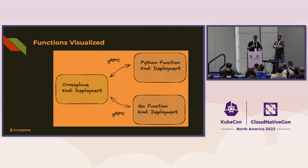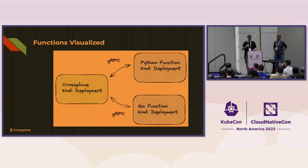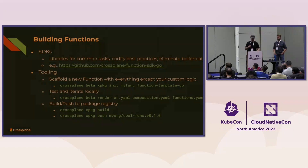You install a function similarly to installing a provider or configuration — Crossplane has a package manager where you declaratively say 'make this function available.' Functions feel like building a serverless function: you edit function.py or function.go, add a little bit of logic, and package it up. But behind the scenes, Crossplane turns that into a long-running deployment pod that speaks gRPC. Whenever someone creates a composite resource — an XR — Crossplane calls these functions over gRPC to determine what it should do.